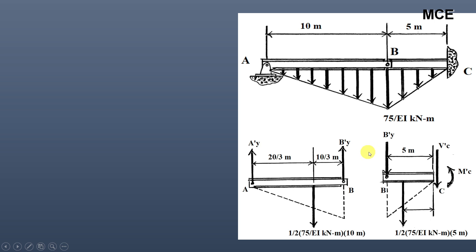I have assumed reactions AY' upward for part AB, BY' upward for part AB, and BY' in the downward direction for part BC. The loading is divided into two triangles. Total load for part AB equals one-half times 75/EI times 10 meters. Its centroid from A is 20/3 meters, and centroid from B is 10/3 meters. Total load for part BC equals one-half times 75/EI times 5. Its centroid from C is 2×5/3 meters, and from B is 5/3 meters.